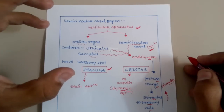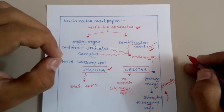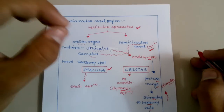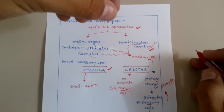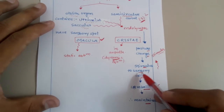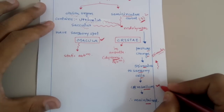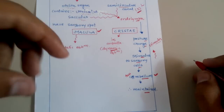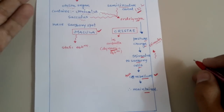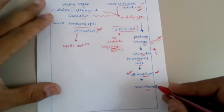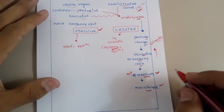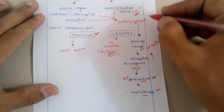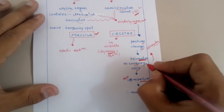When we change our posture, the endolymph also changes its movement, because when we rotate our head the endolymph present in our ear will also rotate or move with our body posture change. That change in posture stimulates the sensory cells and then sends a signal to the cerebellum, which is the equilibrium maintenance center in our brain. The cerebellum then works for the maintenance of body posture as well as equilibrium, and so equilibrium gets maintained.